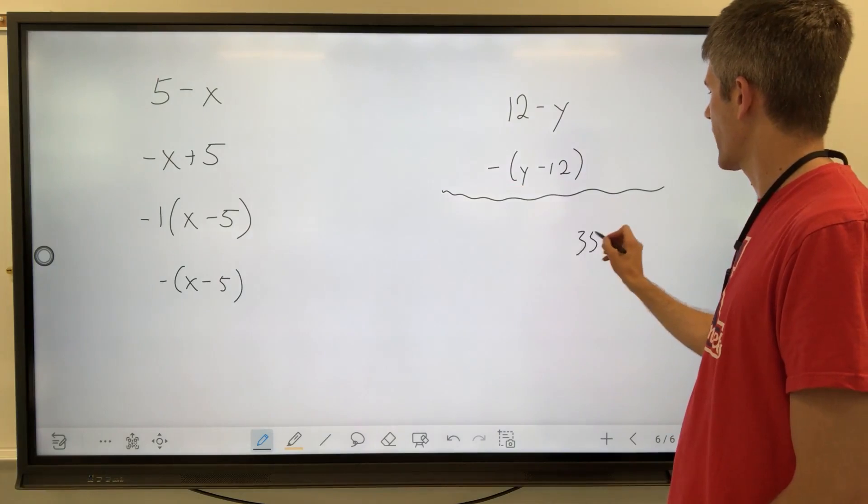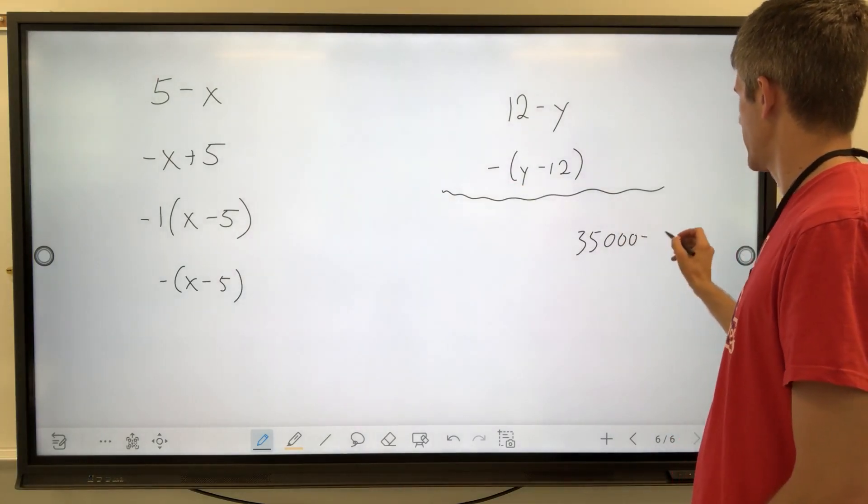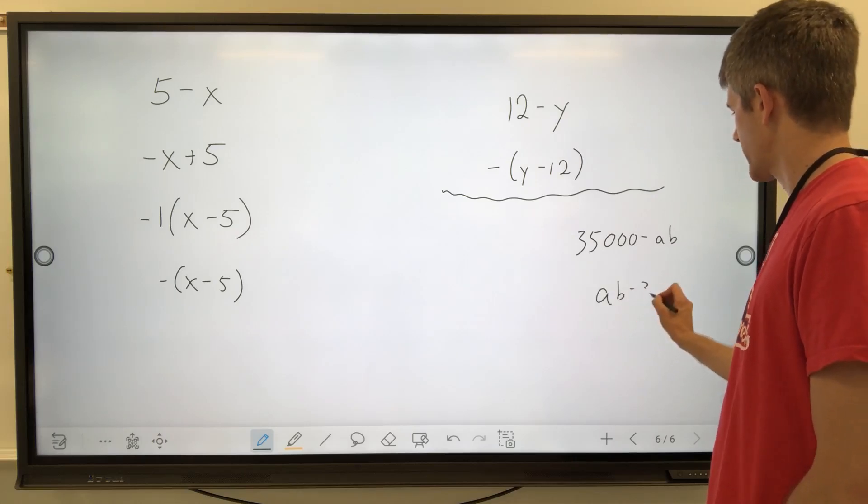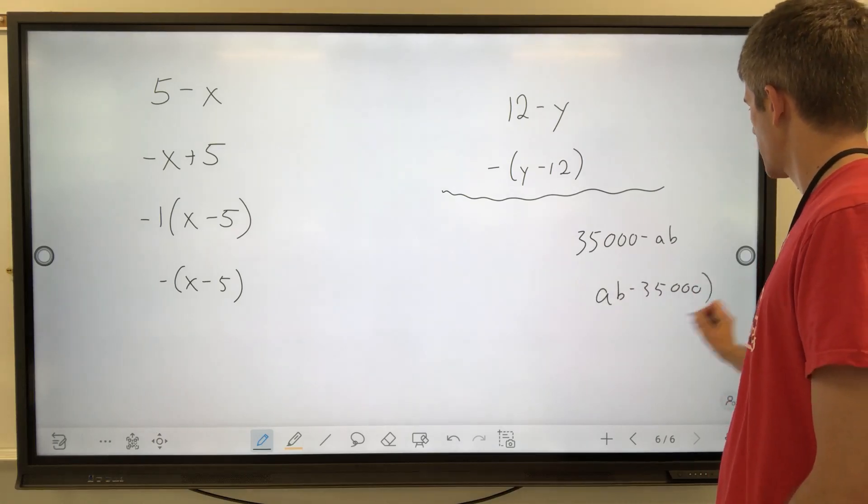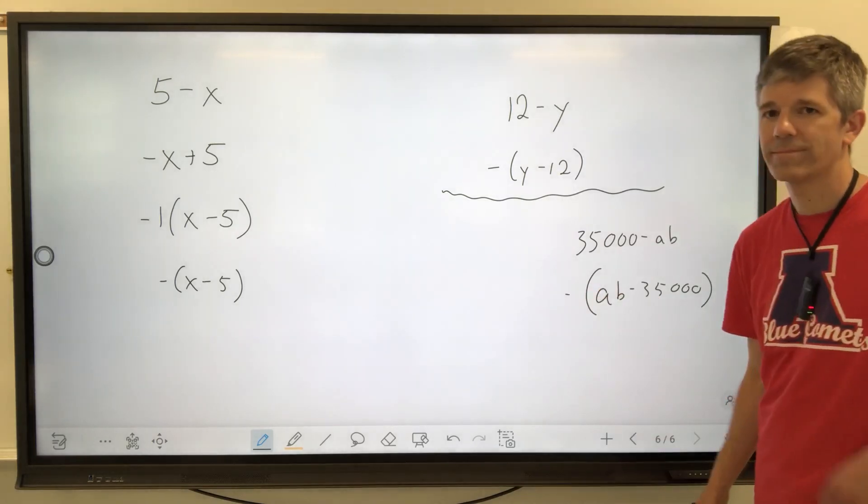If I had 35,000 minus AB, then I can write it as AB minus 35,000, but I factored out a negative 1 to do it. That's what happened.